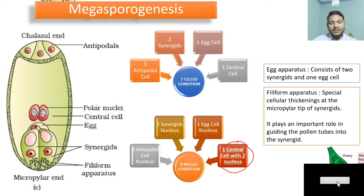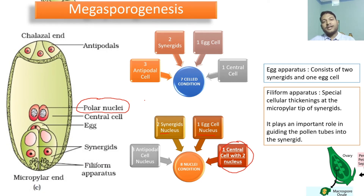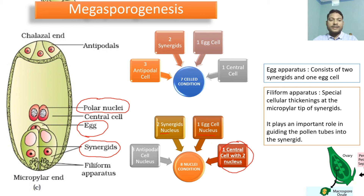The central cell contains two nuclei called the polar nuclei — this is how the seven-celled, eight-nuclei condition is maintained. The egg apparatus refers to the synergids and egg cell together at the micropylar end. The synergids have special thickenings called the filiform apparatus, which guide the pollen tube into the synergids so that the male gametes can be released during fertilization.